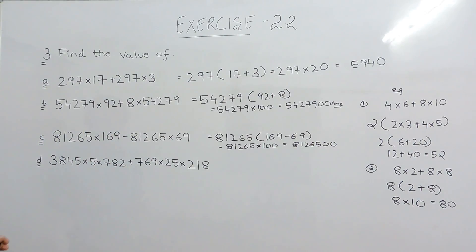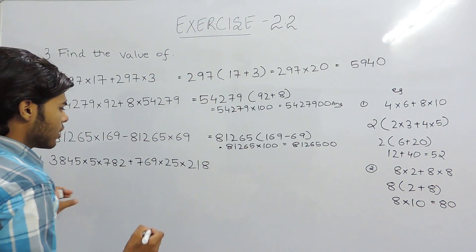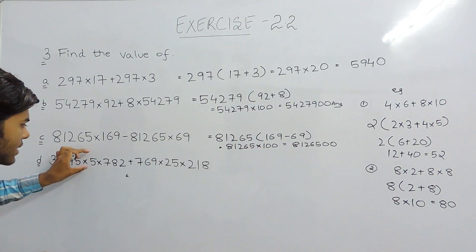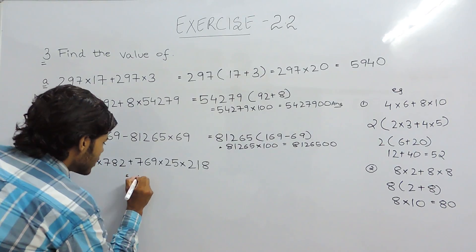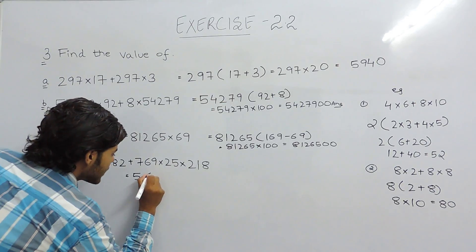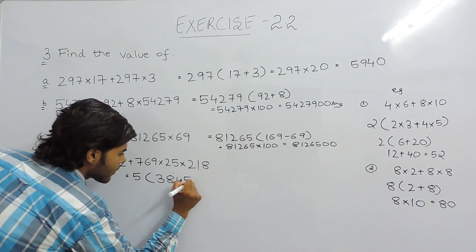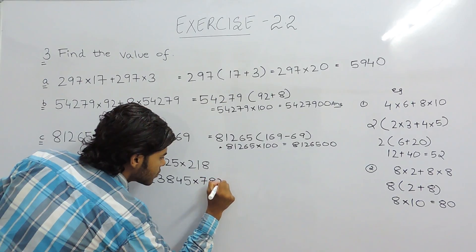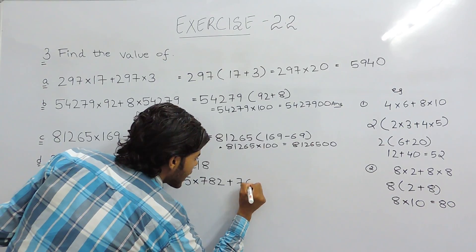Now in this question, taking a single large number as common is not directly possible, so we have to find factors that could be common. First, the factor that can be taken out is 5, because 5 and 25 are both multiples of 5. So we first take 5 as common; inside the bracket remains 3845×782 + 769×...